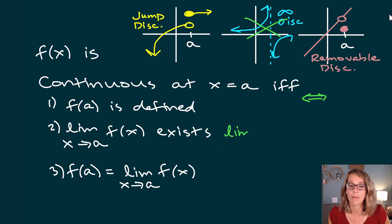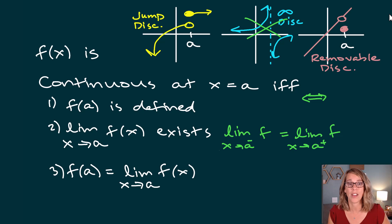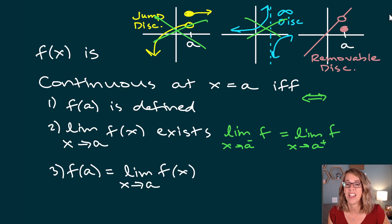The limit existing means it exists both from the left and from the right, and those two values need to be equal. The jump discontinuity fails because we're approaching two different values at a. And finally, the actual function value — the point — needs to line up with the limit. That's condition three, and that is where the removable discontinuity fails.